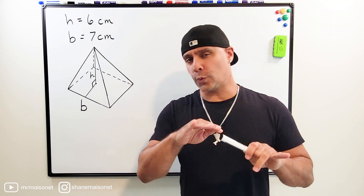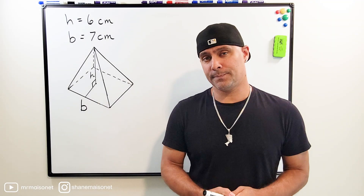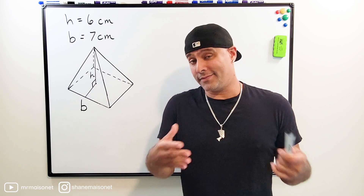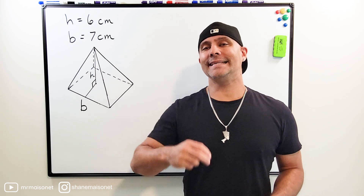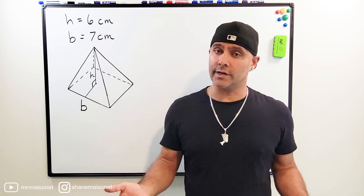What we're going to do is we're going to quickly find the volume of a square pyramid. To find the volume of any square pyramid, we start by finding the area of its base, which is a square.